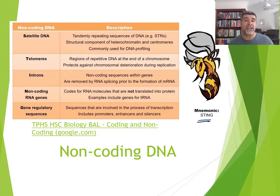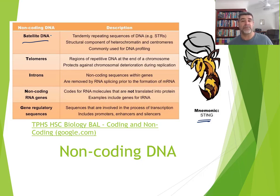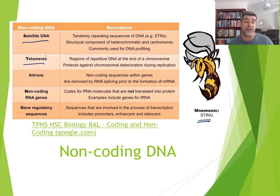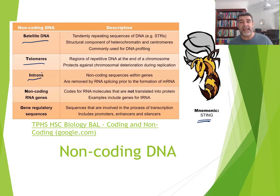The STING mnemonic covers different types of non-coding DNA. S is for satellite DNA — these are just tandem repeats. T is for telomeres, which are regions of repetitive DNA at the ends of chromosomes that seem to have something to do with aging. Telomeres were interesting when Dolly the sheep was cloned — she didn't reach the expected age of a normal sheep, so the number of telomeres she had was examined. I is for introns — the non-coding sequences within genes that can be removed by RNA splicing prior to the formation of messenger RNA.